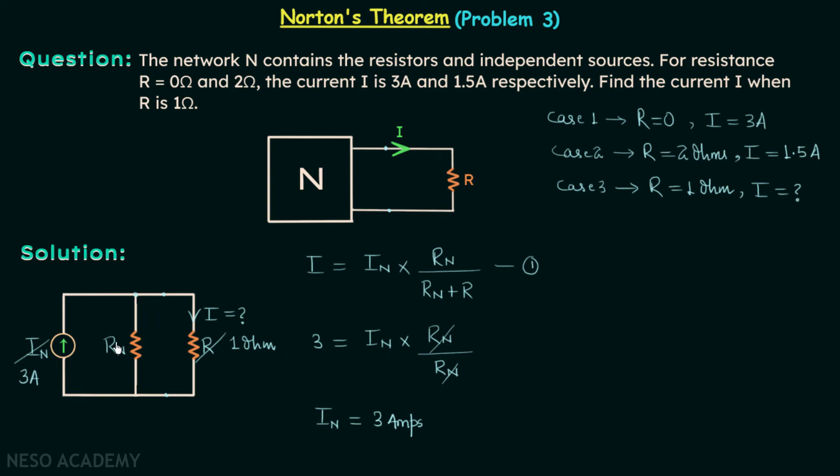Now with the help of case 2, we will have Rn as well. From case 2, we will have 1.5 equal to In multiplied by Rn divided by Rn plus 2. 1.5 we can write as 3 over 2. So we can write 3Rn plus 6 equal to 2 times In Rn. In we know is equal to 3 amperes. So we will have 3Rn plus 6 equal to 6Rn. From here we will have Rn equal to 2 ohms.